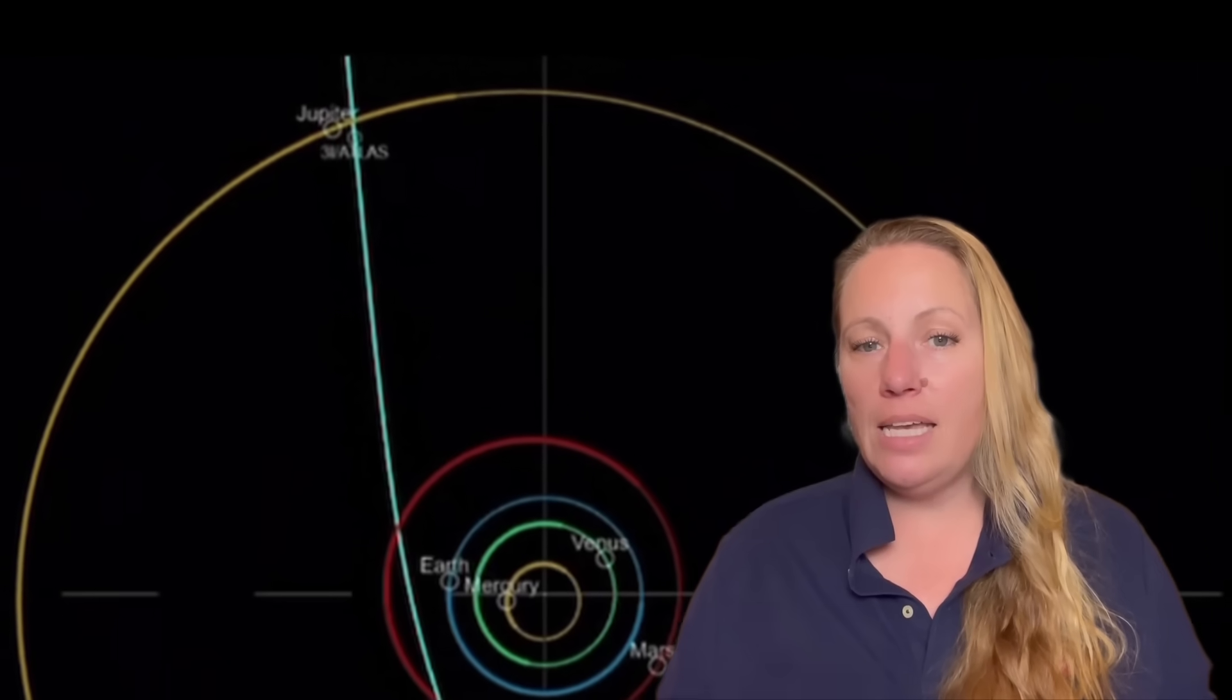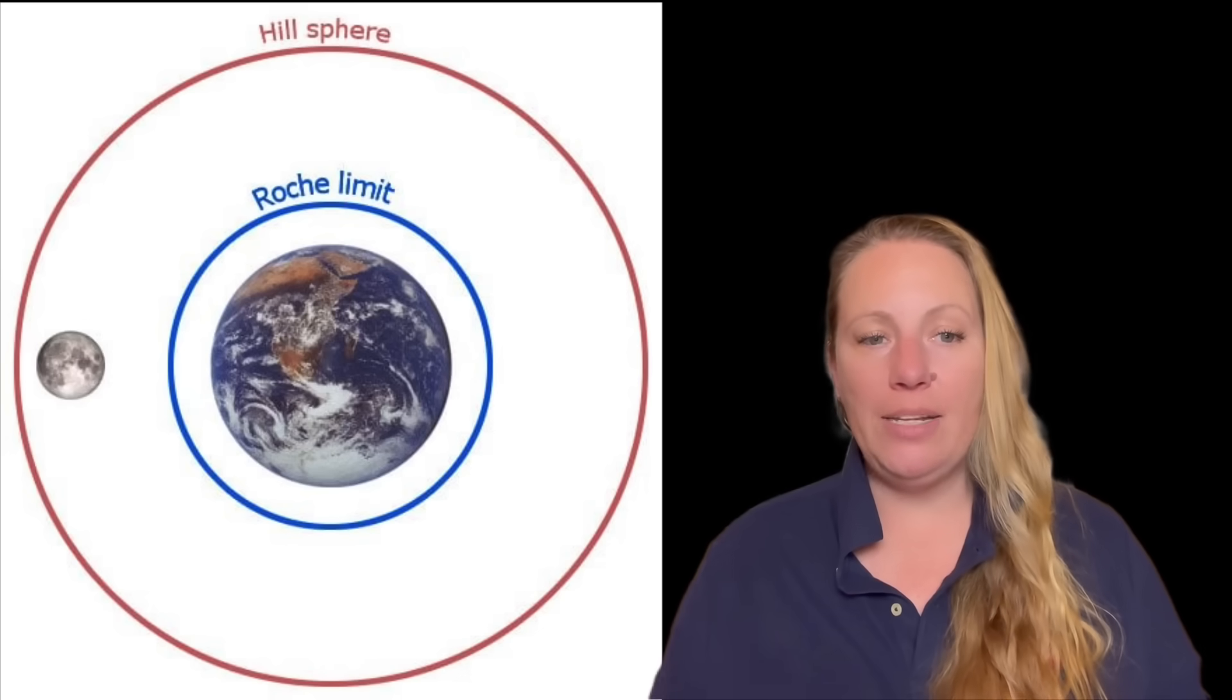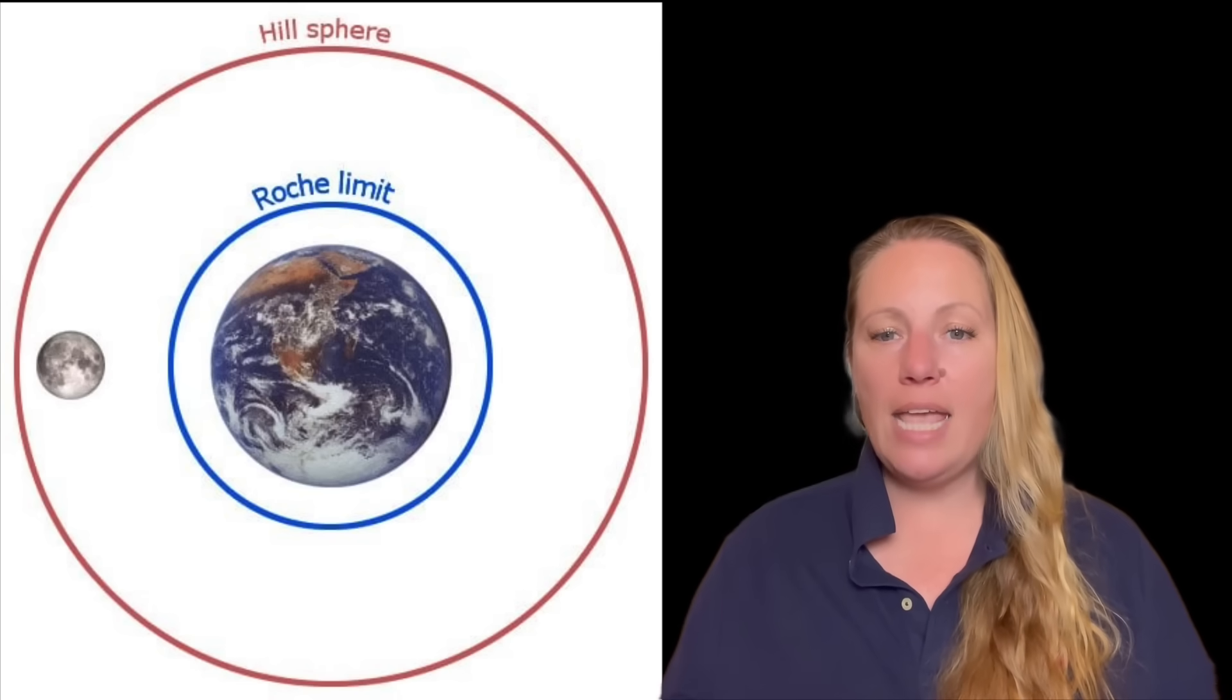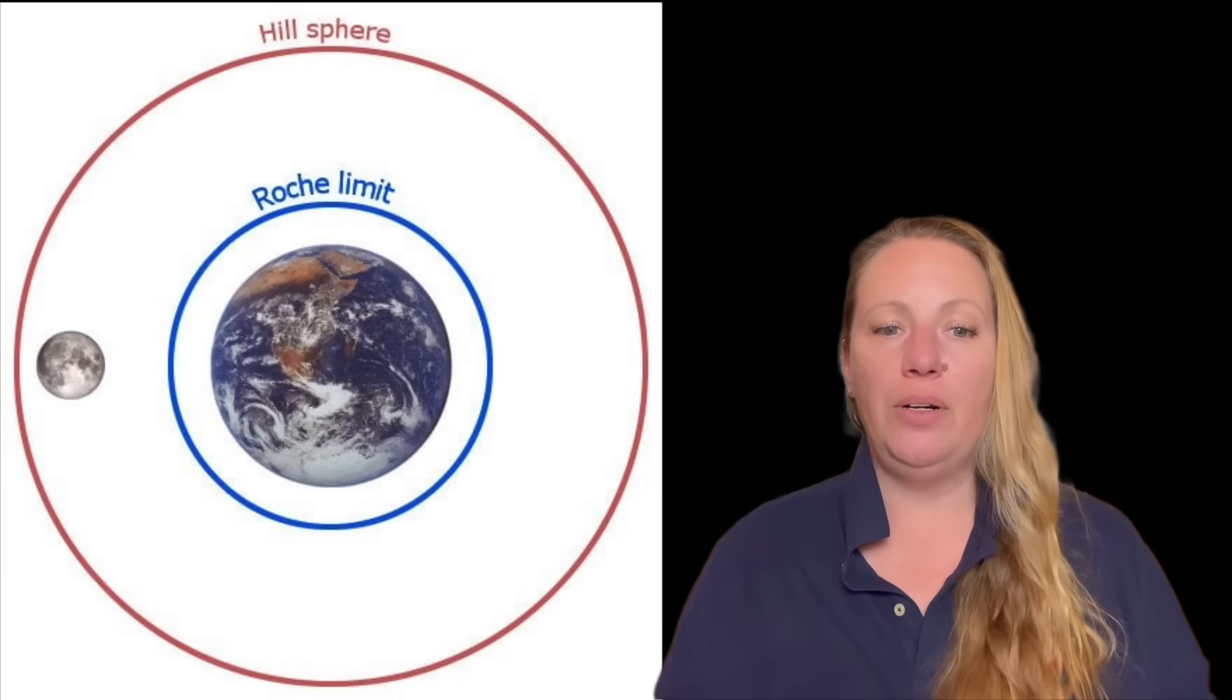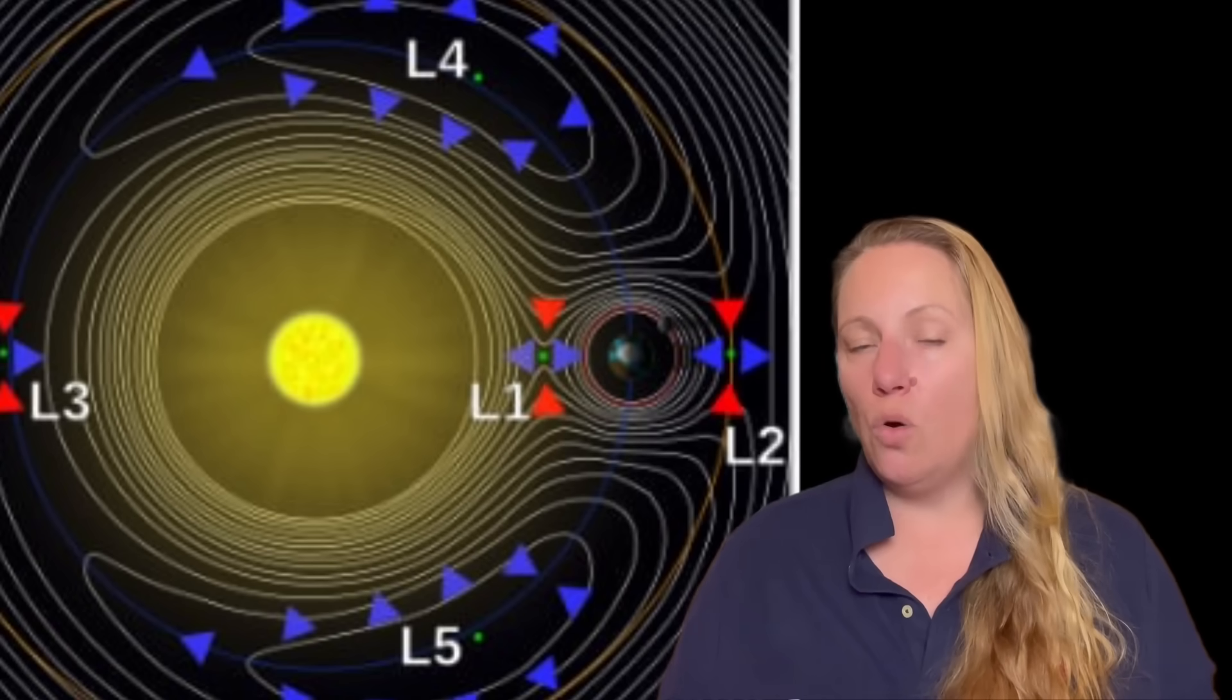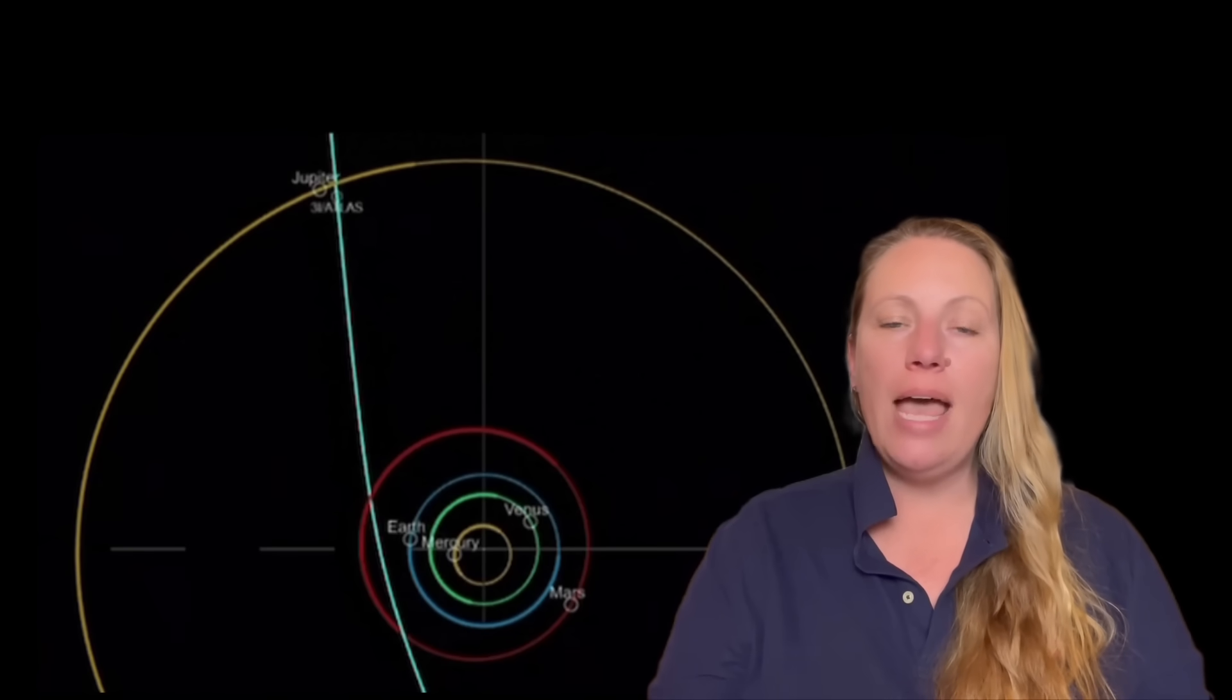If that were the case, where exactly would such a mothership have to arrive? To plant devices around Jupiter, 3i Atlas would need to enter Jupiter's hill radius. This is the region around a planet where the planet's gravity becomes stronger than the sun's gravity. That allows small spacecraft or satellites to stay in stable orbits without being torn away by the sun. Inside this hill sphere are also Jupiter's L1 and L2 Lagrange points, the ideal places for artificial satellites. We can calculate Jupiter's hill radius when we use the distance between Jupiter and the sun, the mass of Jupiter and the mass of the sun.